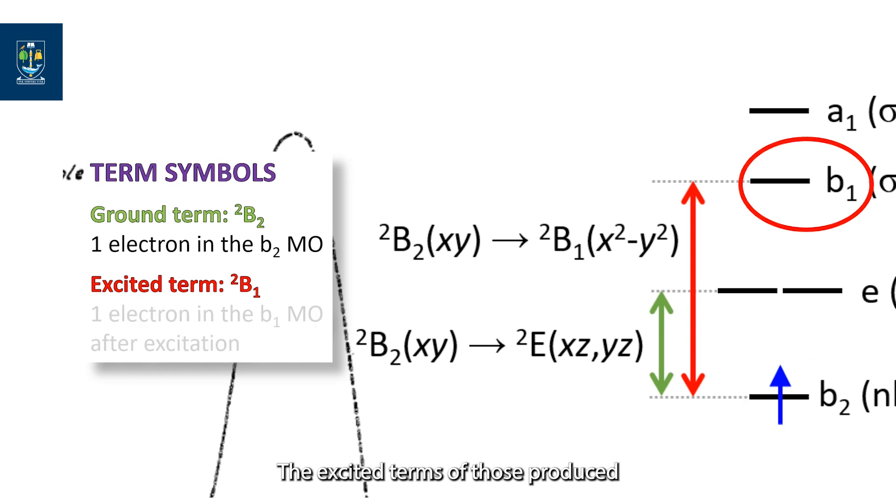The excited terms are those produced when the ground state electron transitions to a higher energy orbital giving an excited state. The same methodology is applied, capitalize the letter designating the symmetry with the spin multiplicity as superscripted before it.